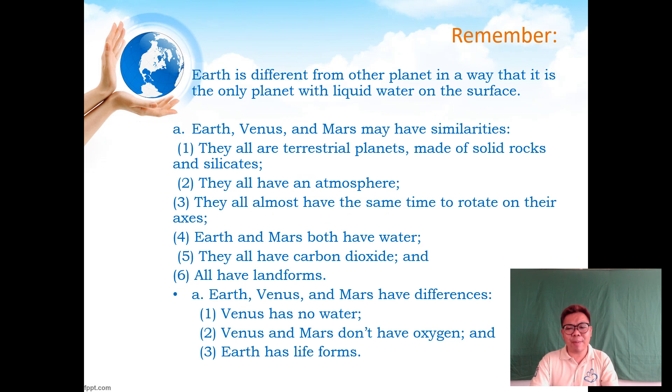Remember also that Earth is different from other planets—the only planet with liquid water on the surface. Earth, Venus, and Mars have many similarities: they're all terrestrial planets made of solid rocks and silicates, they all have atmospheres, the same time to rotate on their axis. Earth and Mars both have water. They all have carbon dioxide and landforms. The differences: Venus has no water, Venus and Mars don't have oxygen, and Earth has life forms. We are the only planet with life.